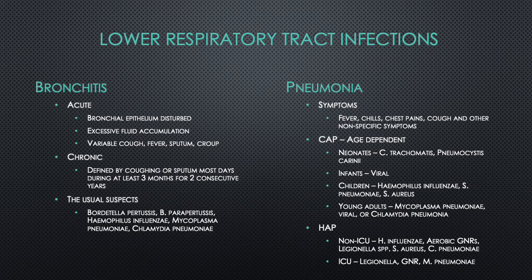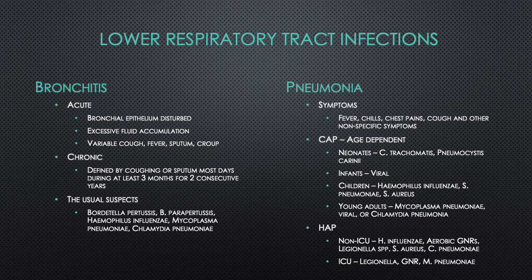The lower respiratory tract has two main infection types: bronchitis and pneumonia. Bronchitis can be acute or chronic. Acute bronchitis involves excessive fluid accumulation, variable cough, fever, sputum, and destruction of the bronchial epithelium. Chronic bronchitis is defined by coughing or sputum production most days for at least three months over two consecutive years. The usual suspects for bronchitis are Bordetella pertussis, Bordetella parapertussis, Haemophilus influenzae, Mycoplasma pneumoniae, and Chlamydophila pneumoniae.